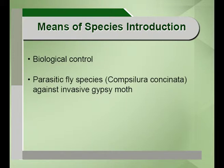Along with ballast water, species are also introduced to new places. A prime example is the zebra mussel, which originated in the Caspian Sea. Carried in ballast water by European container ships, it was discharged into Lake Erie in the Great Lakes of North America. Within a short span of time, the zebra mussel multiplied, adapted to local conditions, and caused a lot of harm to the native mussel population.